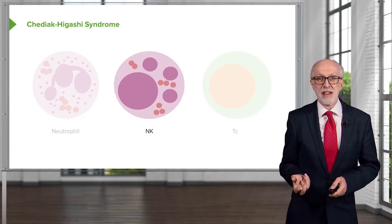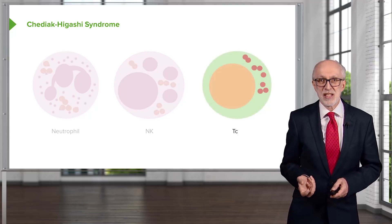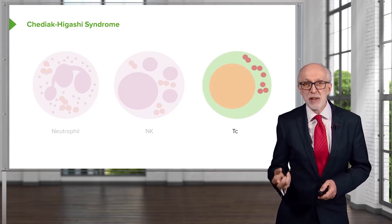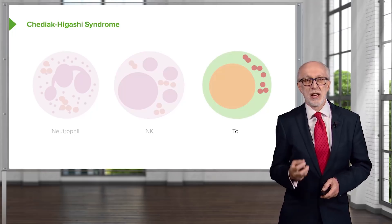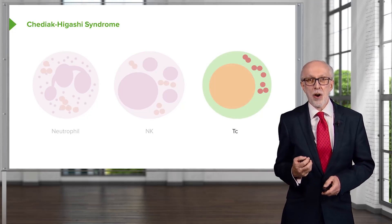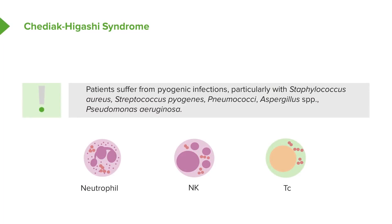Likewise, in the natural killer cell and in the cytotoxic T cell, these large granules accumulate in the cytoplasm and interfere with the correct activity of the cell. Patients suffer from a range of pyogenic infections, particularly with Staphylococcus aureus, Streptococcus pyogenes, pneumococci, Aspergillus species, and Pseudomonas aeruginosa.